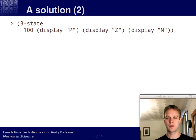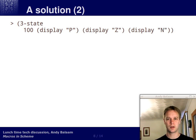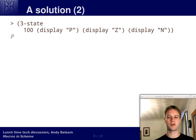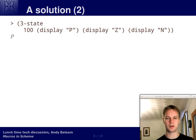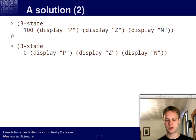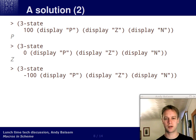Let's try it out. Instead of the function three-state we have the macro three-state. When we run it, it does indeed print out P, because underneath that cond expression is being substituted in and then run. Let's try it with zero — we print out Z — and let's try it with minus 100 — we print out N. So it does work.